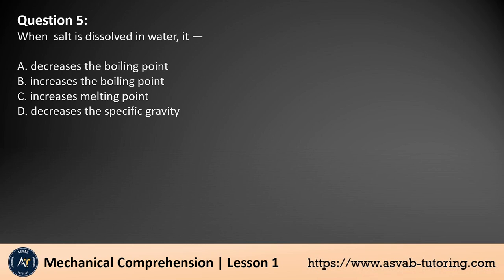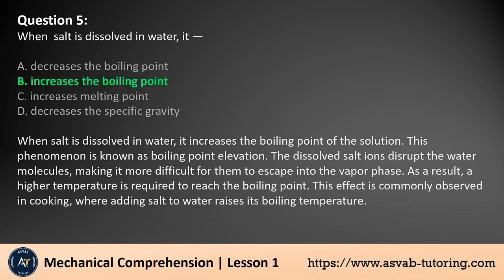Question 5. When salt is dissolved in water, it: A. Decreases the boiling point, B. Increases the boiling point, C. Increases melting point, D. Decreases the specific gravity. The answer is B. When salt is dissolved in water, it increases the boiling point of the solution. This phenomenon is known as boiling point elevation. The dissolved salt ions disrupt the water molecules, making it more difficult for them to escape into the vapor phase. As a result, a higher temperature is required to reach the boiling point. This effect is commonly observed in cooking, where adding salt to water raises its boiling temperature.